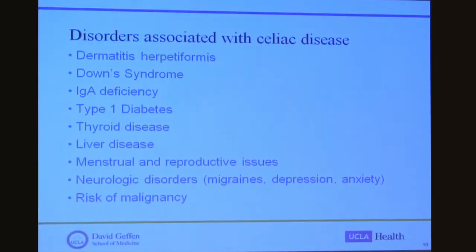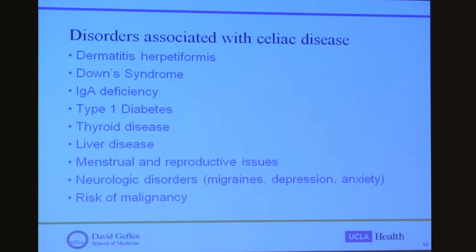Who should we be screening for celiac disease? There are a number of disorders well-associated with celiac disease, including dermatitis herpetiformis, Down syndrome, IgA deficiency, type 1 diabetes, thyroid disease (both hyper- and hypothyroidism), liver disease — most commonly a mild elevation in transaminases — various menstrual and reproductive issues including infertility, early menarche, late menopause, miscarriage, preterm labor, and low birth weight, as well as a variety of neurologic disorders. There is also an increased risk of malignancy, in particular small bowel lymphoma.